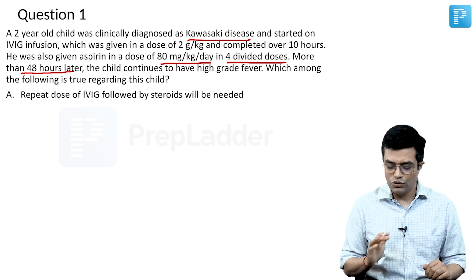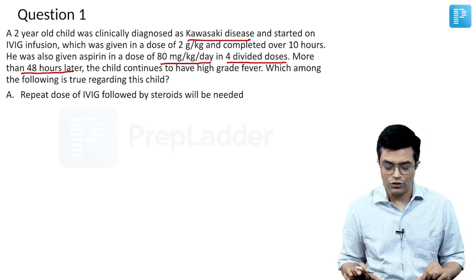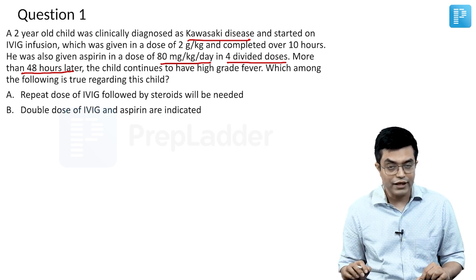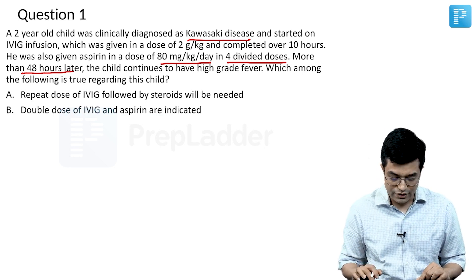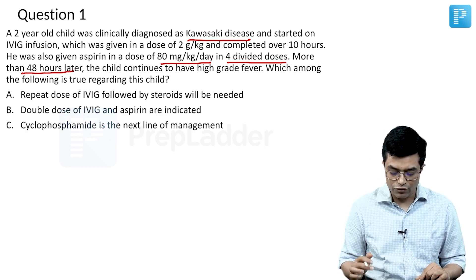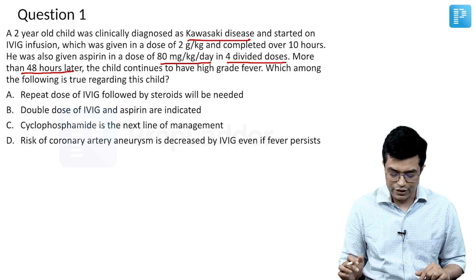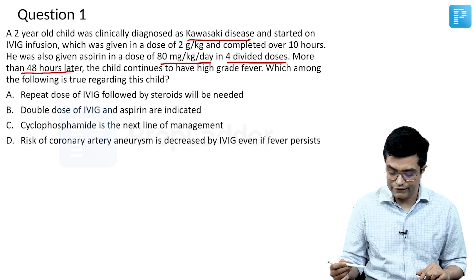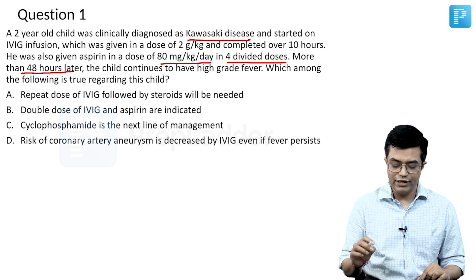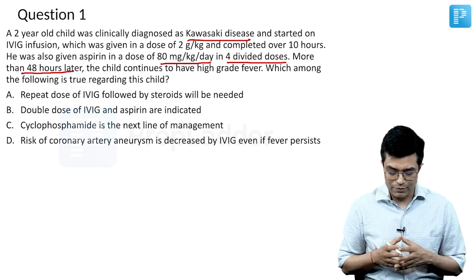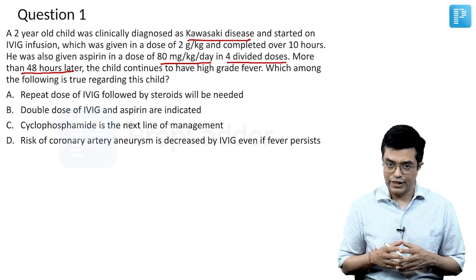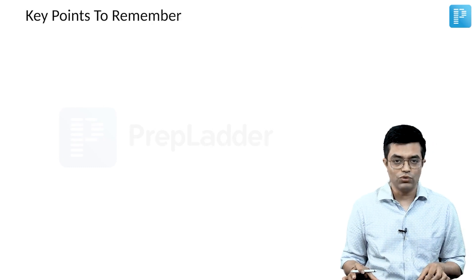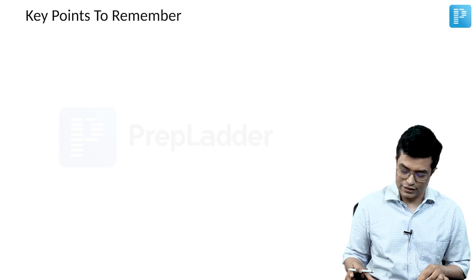The options are: first, repeat dose of IVIG will be needed followed by steroids. Second, double dose of IVIG and aspirin are indicated. Third, cyclophosphamide is in the management. And fourth, risk of coronary aneurysm is decreased by IVIG even if fever persists. Let us discuss the key points related to IVIG-resistant KD.